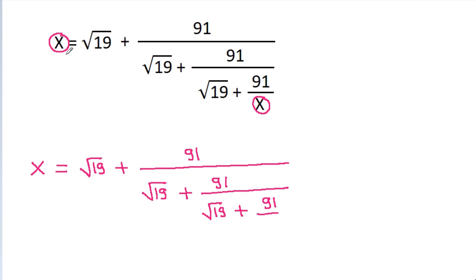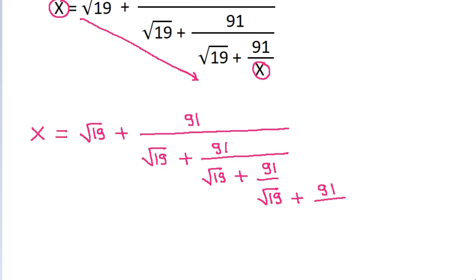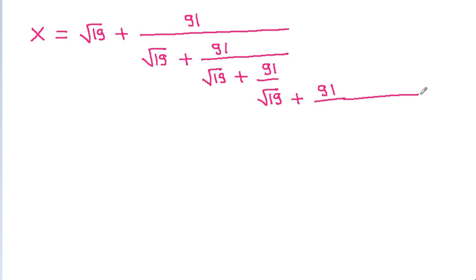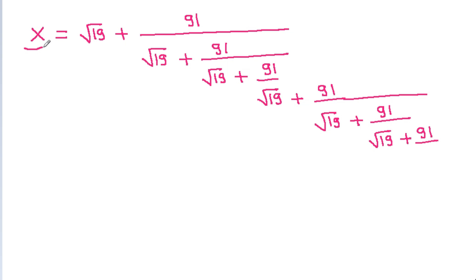x is equal to a square root of 19 plus 91 by a square root of 19 plus 91 by x. And again x is equal to this — it will continue to infinity.